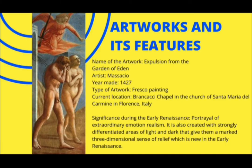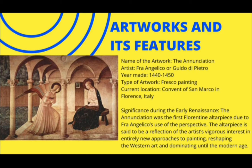There are various remarkable artworks in the early Renaissance. First is the Expulsion from the Garden of Eden. It illustrates the event from the Book of Genesis Chapter 3. It was made in the year 1427 by Masaccio, and is currently located on the walls of Brancacci Chapel in the Church of Santa Maria del Carmine in Florence, Italy. Its significance is that it portrays extraordinary emotional realism. It is also created with strongly differentiated areas of light and dark that give a marked three-dimensional sense of relief, which is new in the early Renaissance. The second artwork is the Annunciation, made by Fra Angelico in the year 1440 to 1450 for the decoration of San Marco Convent's walls, where it is currently located. The Annunciation was the first Florentine altarpiece due to Fra Angelico's use of perspective. The altarpiece is said to be a reflection of the artist's vigorous interest in entirely new approaches to painting, reshaping Western art and dominating until the modern age.